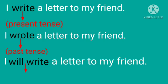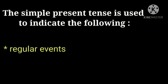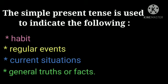In the last sentence, the work is about to happen. So, this form of verb is called future tense. The simple present tense is used to indicate habit, regular events, current situations, and general truths or facts.